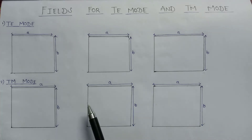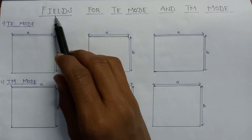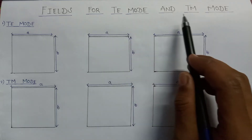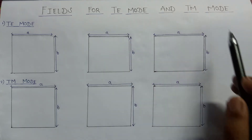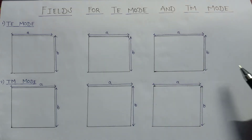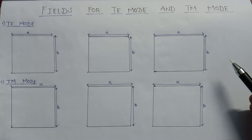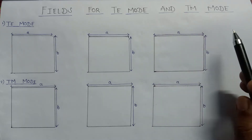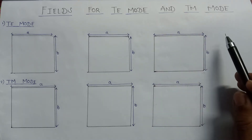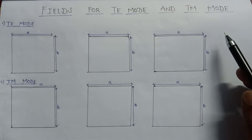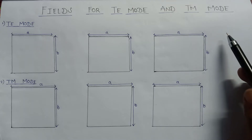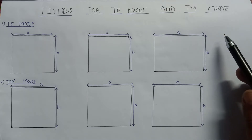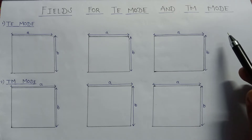Welcome all. In this lecture, we are going to study about fields for TE mode and TM mode. Since we know that the rectangular waveguide provides support only for TE mode and TM mode, but on the other hand, it does not support TEM mode, that is transverse electromagnetic mode.